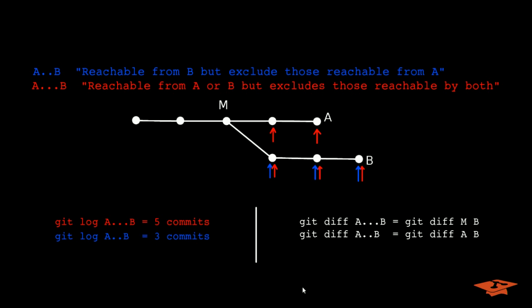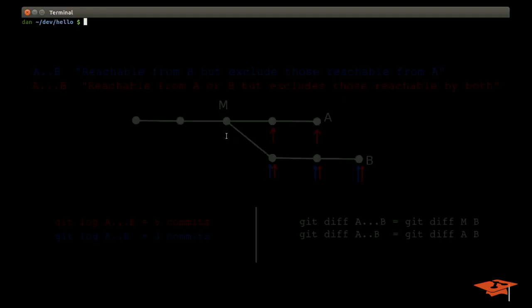I hope that makes sense. I'm going to bring this back up after showing you a couple examples because this notation is useful, especially the triple dot notation when it comes to git diff. So let's see if we can flip over to the terminal and show you what I mean here.